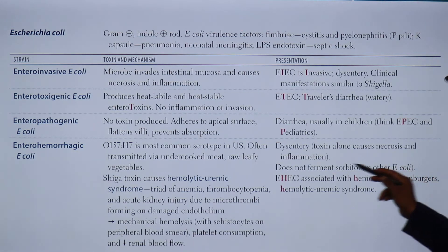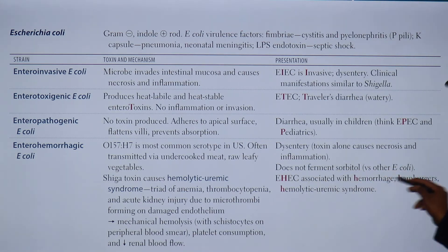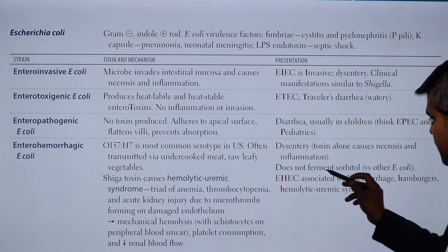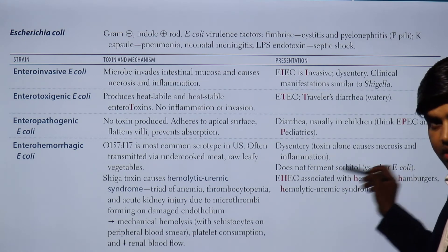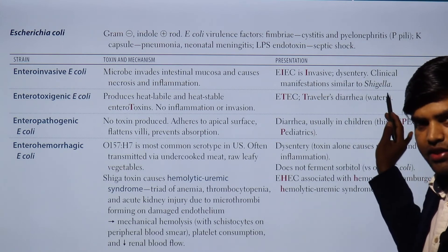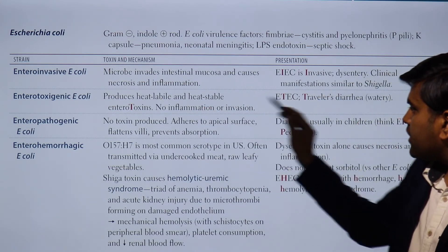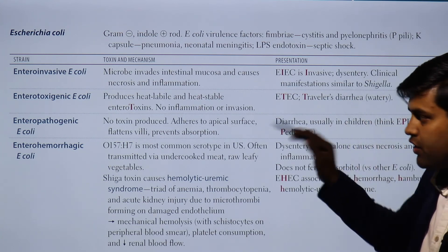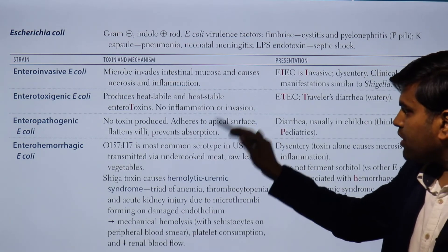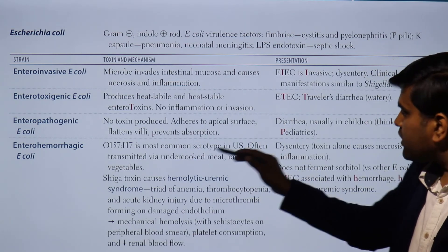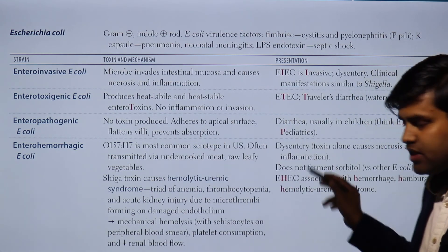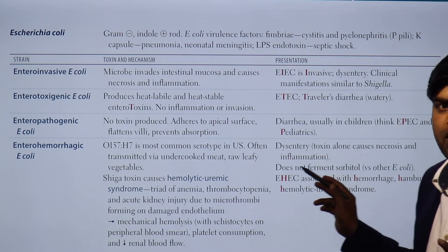Unlike other E. coli, EHEC does not ferment sorbitol. As a mnemonic recap: EIEC causes invasive diarrhea — I for I; ETEC causes travelers' diarrhea — T for T; EPEC causes pediatric diarrhea — P for P; EHEC causes hemorrhagic diarrhea with hemolytic uremic syndrome as a complication — H for H.